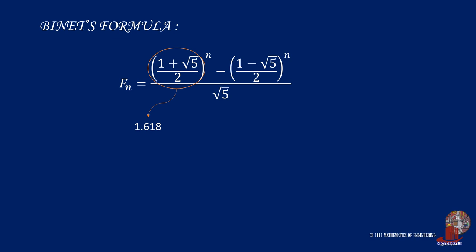which we have seen earlier as the golden ratio. Also, the second term is computed as negative 0.618, which we can express as 1 minus the golden ratio. Thus, the Binet's formula can also be shown using phi as F sub n is equal to the ratio of phi raised to n minus the quantity of 1 minus phi raised to n all over the root of 5.